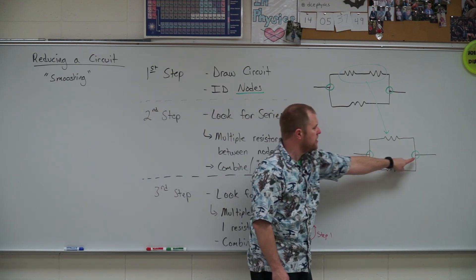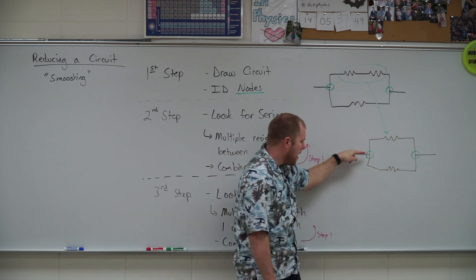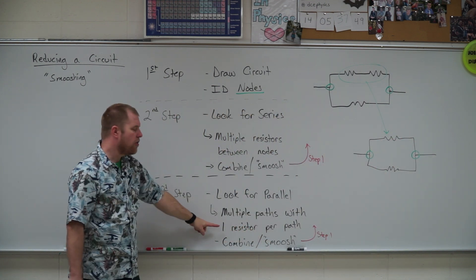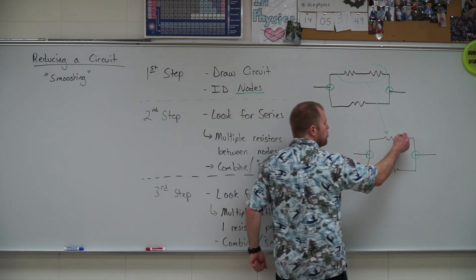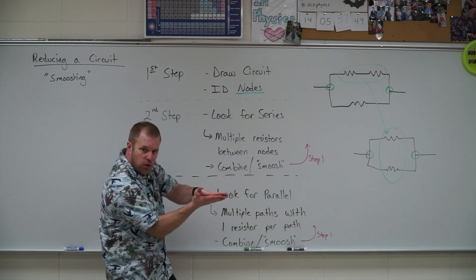So when I go from this node to this node, I can either go up - only one resistor on that path - or go down - only one resistor on that path. In that case, those two are in parallel, so I need to combine or smoosh them together into a single resistor.